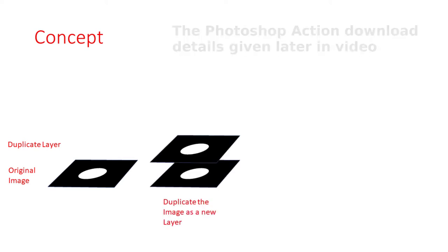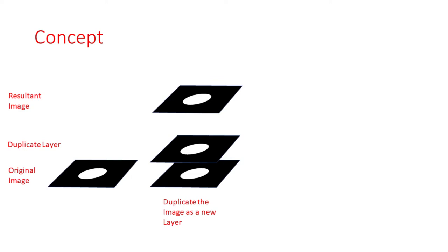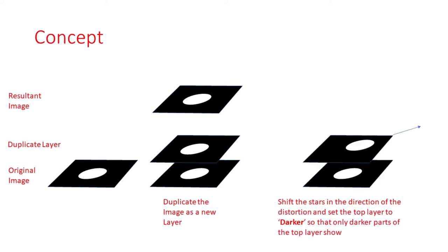First you'll need to duplicate your image as a new layer. The default layer mode is called Normal, and this just shows the top layer so you shouldn't see any change yet in your image. If we change the layer mode of the top layer to Darker, then any parts of the image that are darker in the layer below will show through the layer above. But because the layers are both exactly the same you won't actually see any difference. Now here comes the trick: if you move the layer above in the direction of the ovalness of your stars, then your stars will start to look more circular.